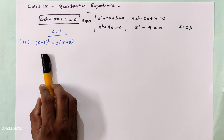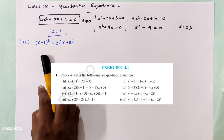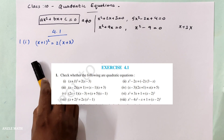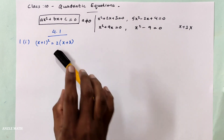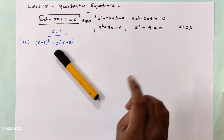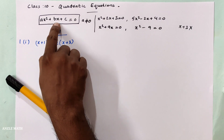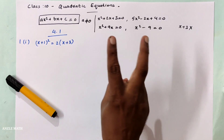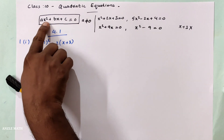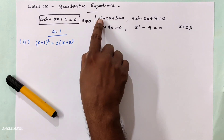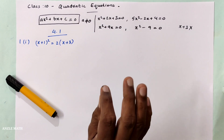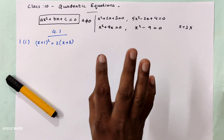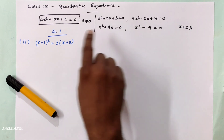The next step is to check whether the following are quadratic equations. If we can write it in the form ax² plus bx plus c, then it is quadratic. The two conditions are: the highest power is 2, and we can write x squared.